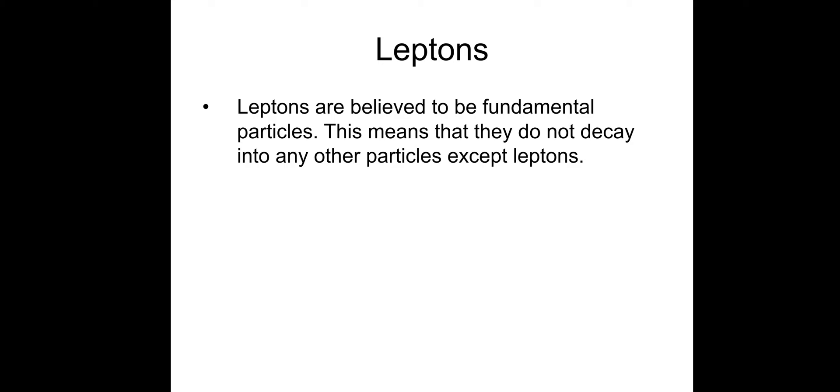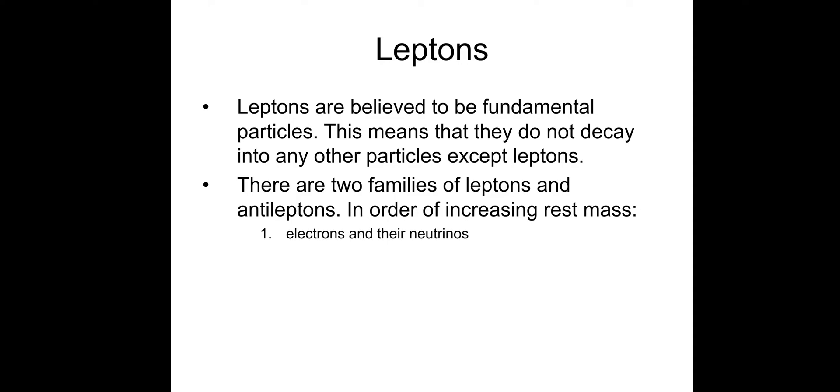Leptons are believed to be fundamental. This means they do not decay into any other particles except leptons. Two families of leptons and antileptons in order of increasing rest mass: electrons and their neutrinos, and then muons and their neutrinos. Muons are just very large electrons with a mass 207 times the mass of the electron. They also have their own neutrinos called muon neutrinos.